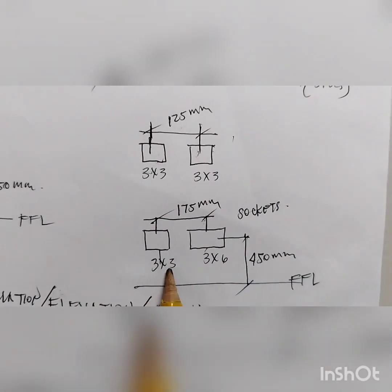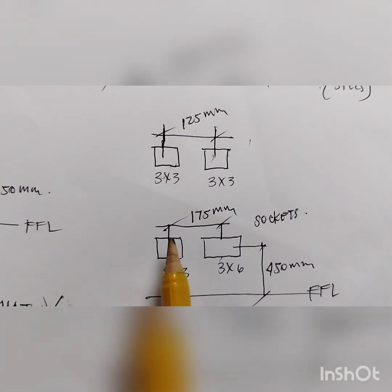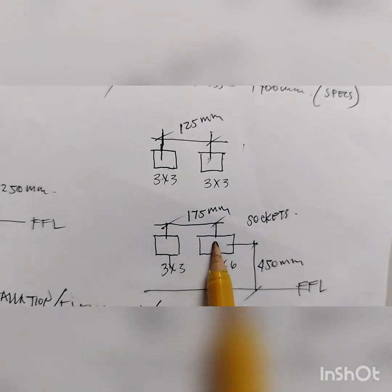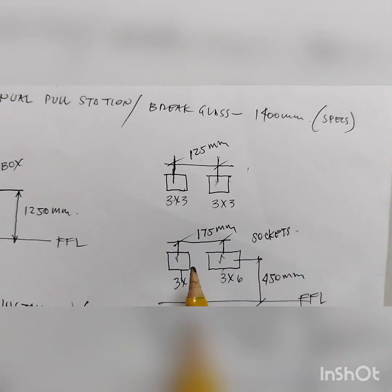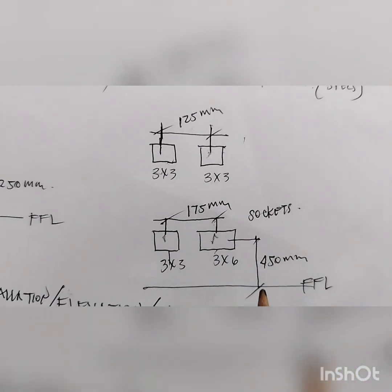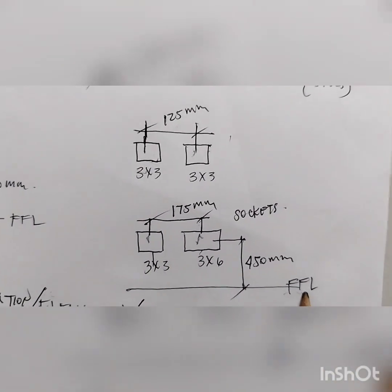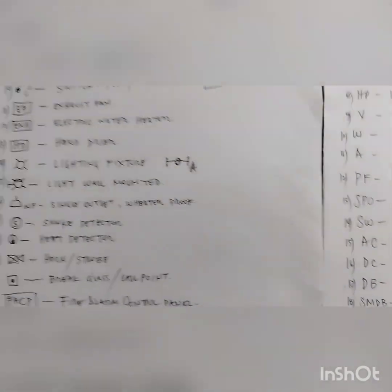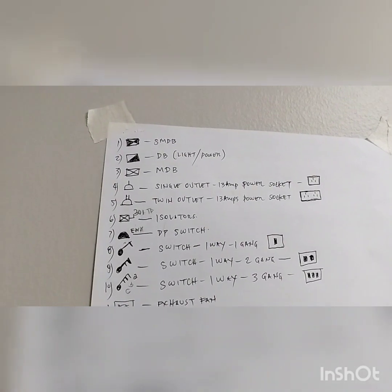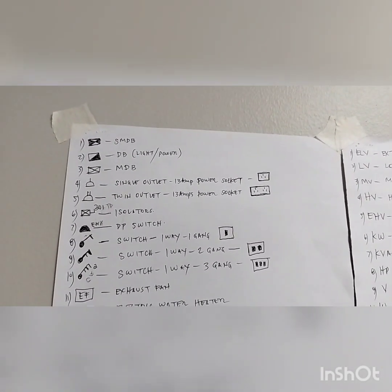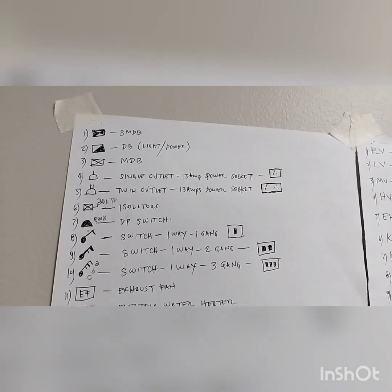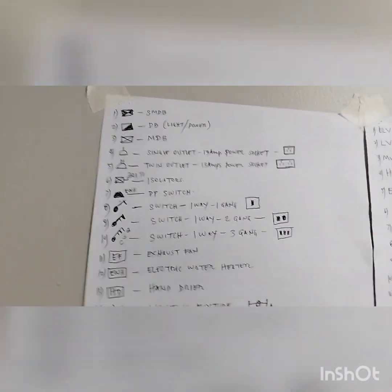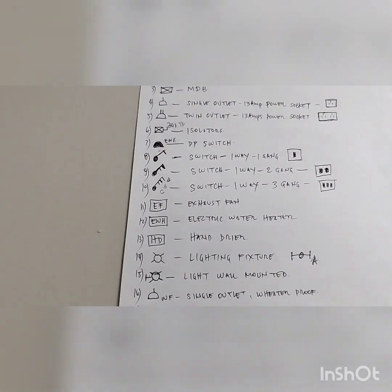If you are using one 3x3 box and one 3x6 box together, the distance between them should be 175 mm, again measured from the center of the boxes. For small power, socket, telephone, and data outlets, the standard mounting height is 450 mm from the finished floor level, measured from the center of the box. That's all for today gentlemen. I hope you learned new things and this topic added to your knowledge. Thank you very much and good luck until the next lecture.